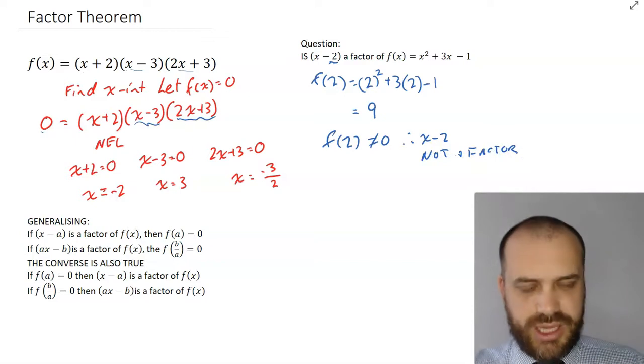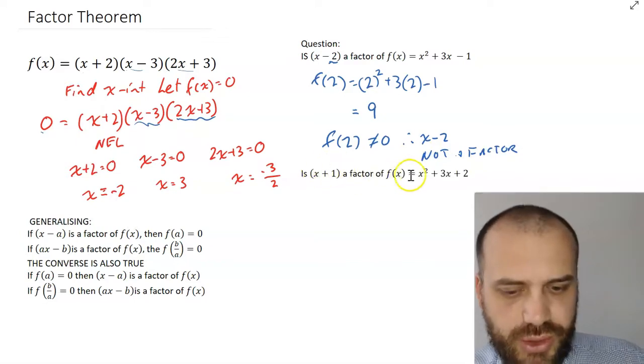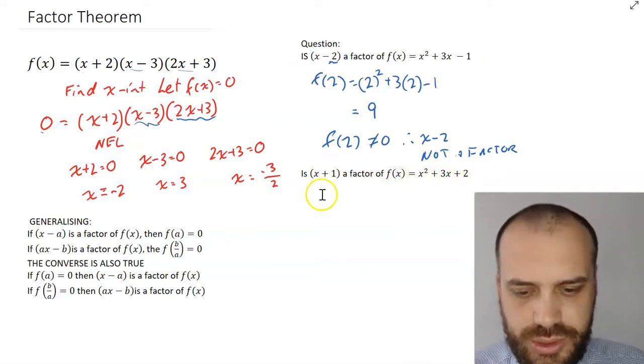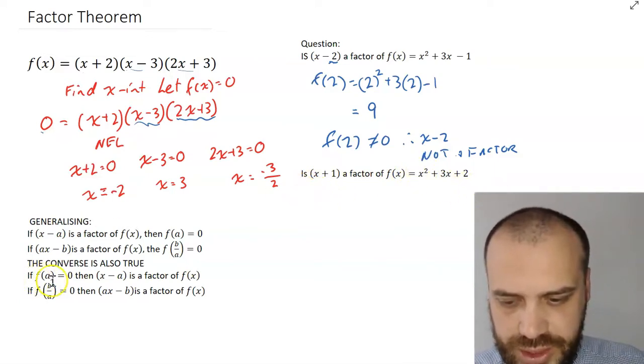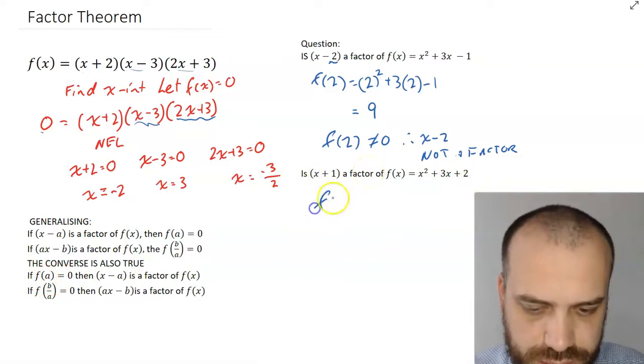Now, that's pretty unsatisfying. Let's look at a slightly different example. So, is (x + 1) a factor of x squared plus 3x plus 2? Well, if it's a factor, then f(a) equals 0, where a in this case is negative 1.